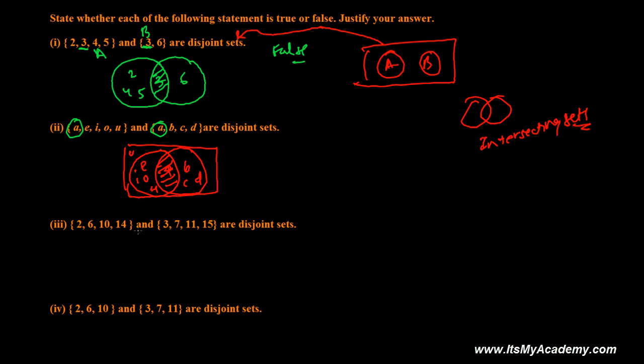Now {2, 6, 10, 14} and {3, 7, 11, 15}. Let's see here. 2, 6, 10, 14 and 3, 7, 11, 15. Yes, this is our Disjoint Sets.